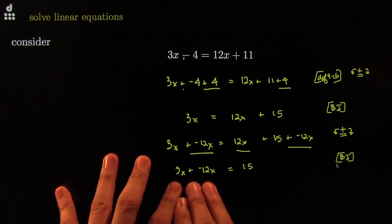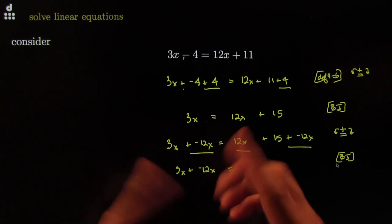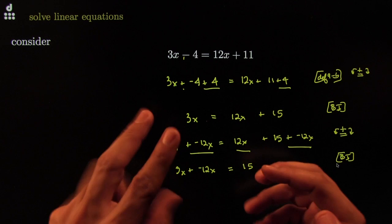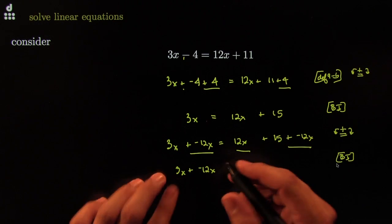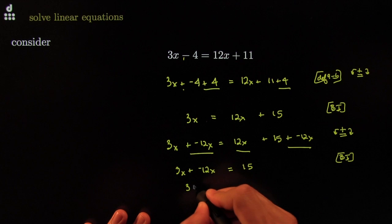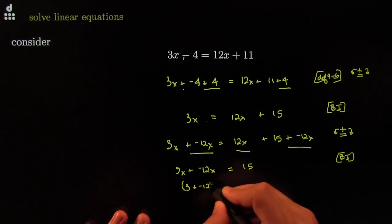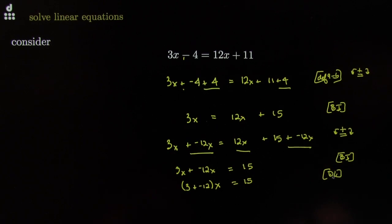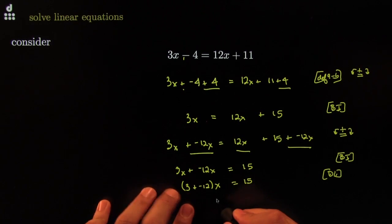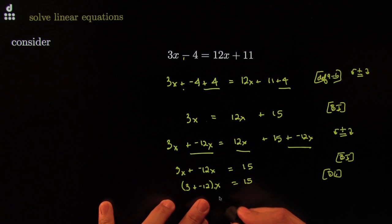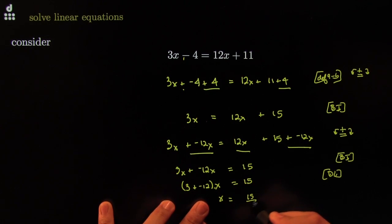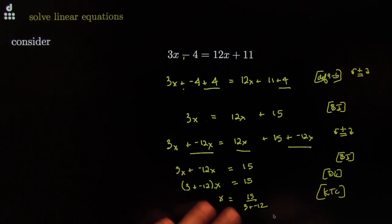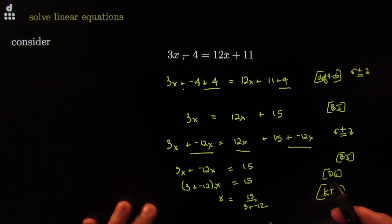Now I've moved all the x's to one side and the x-less items to the other side — that's step 2. From step 2, I can do step 3: gather the x's. By distributive law: 3 plus negative 12, times x, equals 15. Now I have one x with one coefficient, so all I have to do is kill it — x equals 15 over (3 plus negative 12). That's kill the coefficient.